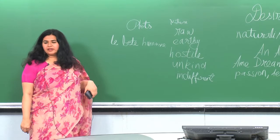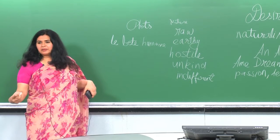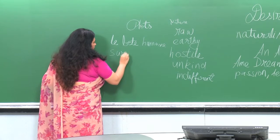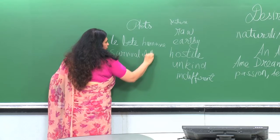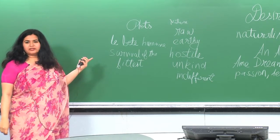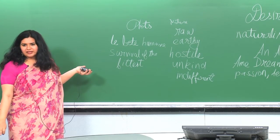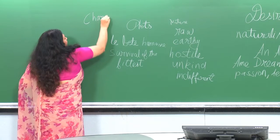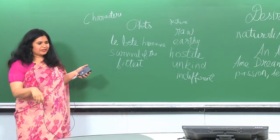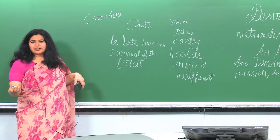What kind of plot does An American Tragedy have? Darwin spoke of survival of the fittest. The human beast must struggle and even kill its own kind in order to survive. Characters in naturalism are driven by greed, passion, ambition, and betrayal, and they generally come from the working class.